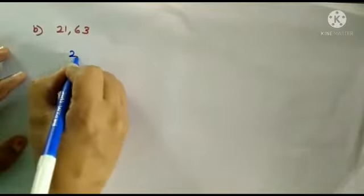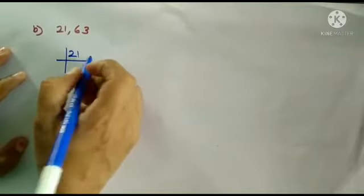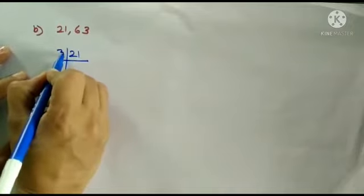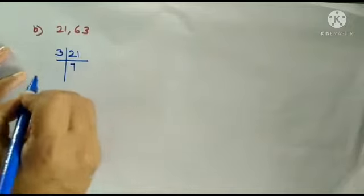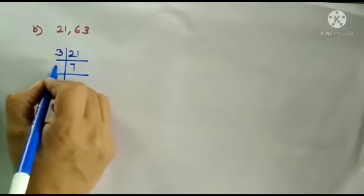Part b is 21 and 63. We use prime factorization method to find HCF. 21, does it come in 2's table? No. It comes in 3's table. 3 times 7 is 21. 7 also doesn't come in any other table. 7 times 1 is 7.